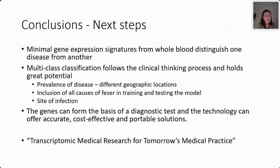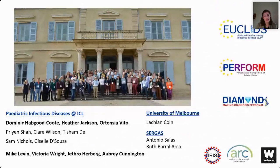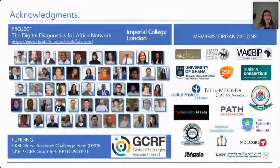To conclude, I hope I've convinced you that minimal gene expression signatures from whole blood can distinguish one disease from another. Multi-class classification, which follows exactly the clinical thinking process, is much more real-world and holds great potential. In combination with the brilliant technology that our partners bring, we can potentially offer a solution that is accurate, cost-effective, and very portable, based on gene expression measurements in the blood. I'd like to thank everyone involved in this endeavour over the past decade and the Digital Diagnostics Network for Africa.